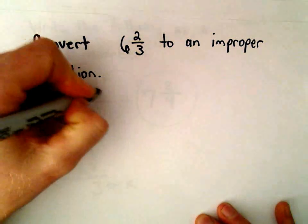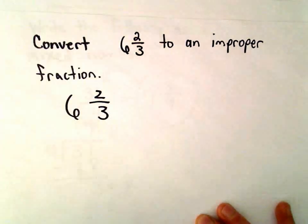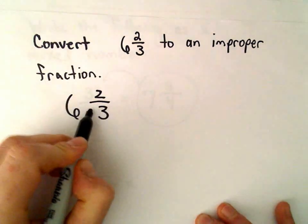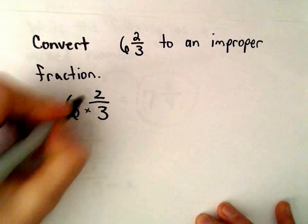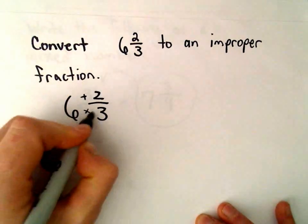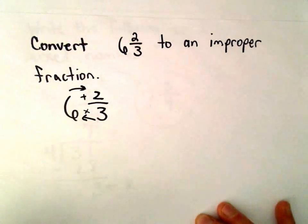The way that we do this is pretty easy. What we do is we take the bottom number and we multiply. So we say 6 times 3, and then we add it to the top number. So we're going to multiply and then add.